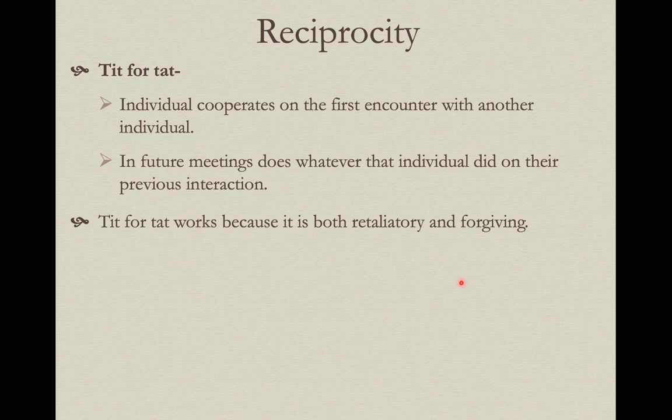But here's where the forgiving part comes in. If your roommate comes back and says: 'Yeah, sorry, I was being a real jerk — here's the 20 bucks,' then you've reset the table. If they come to you in the future, you're more likely to lend them the 20 bucks again, because they've re-established trust. So it's retaliatory for one step if they don't repay, but forgiving as soon as they do return the favor.